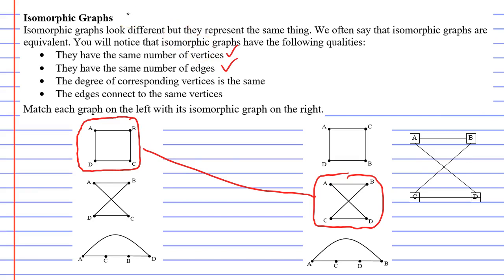The third dot point says the degree of corresponding vertices is the same. And what you'll notice is no matter what vertex you look at, it's got a degree of two. There are two edges connected to each vertex. And that is the same for both of them.